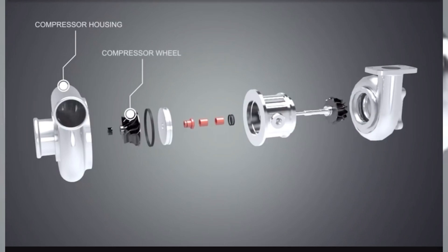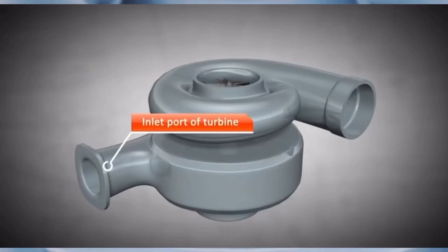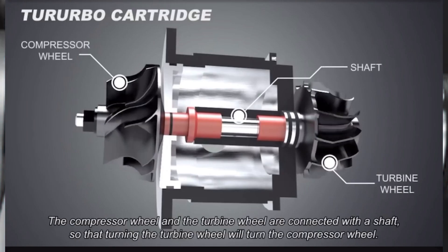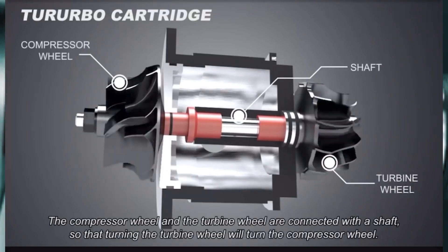So within a turbocharger, you have a compressor housing, a compressor wheel, a turbine wheel, and a turbine housing. And we're going to make this as easy to understand as possible, but you also have a connecting shaft that connects the turbine wheel to the compressor wheel.